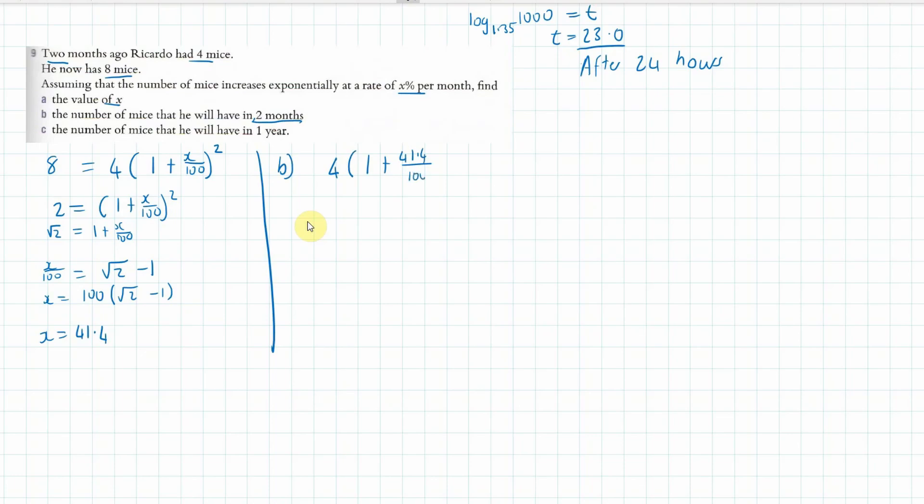And then to the power of four months because it's four months from the beginning. Now when we do that, what do we get? Let's have a look. 4 times 1 plus, put a bracket, 41.4 over 100 to the power of 4, and I'm getting 16 there.